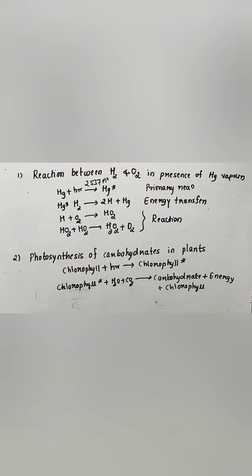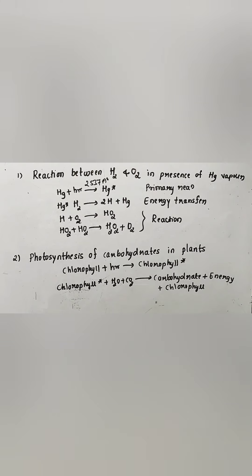The mercury transfers its energy to the hydrogen molecule, forming hydrogen free radicals. These hydrogen free radicals react with oxygen molecules to form an intermediate product, HO₂, which reacts further to give hydrogen peroxide along with release of one oxygen molecule. The absorption of radiation by mercury is the primary reaction; the transfer of energy from excited mercury to hydrogen is the second step; and the reaction of hydrogen free radicals with oxygen to form intermediate and final products is the third step.